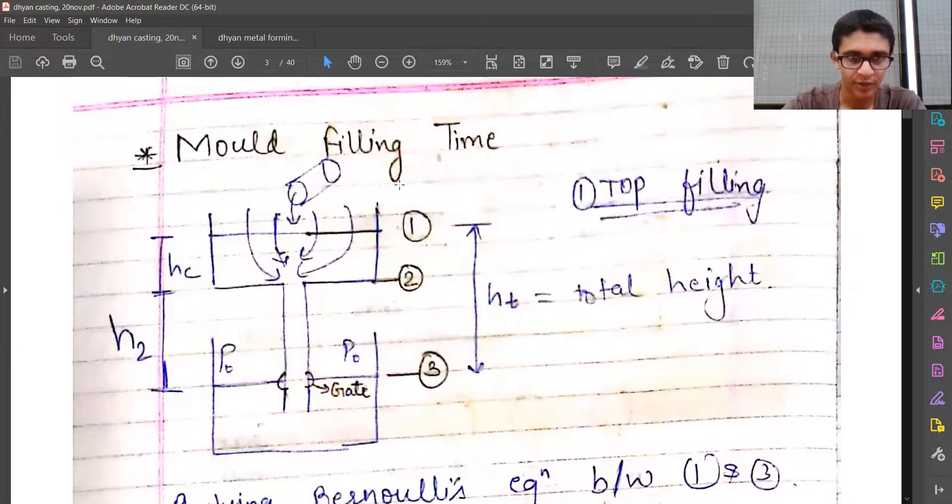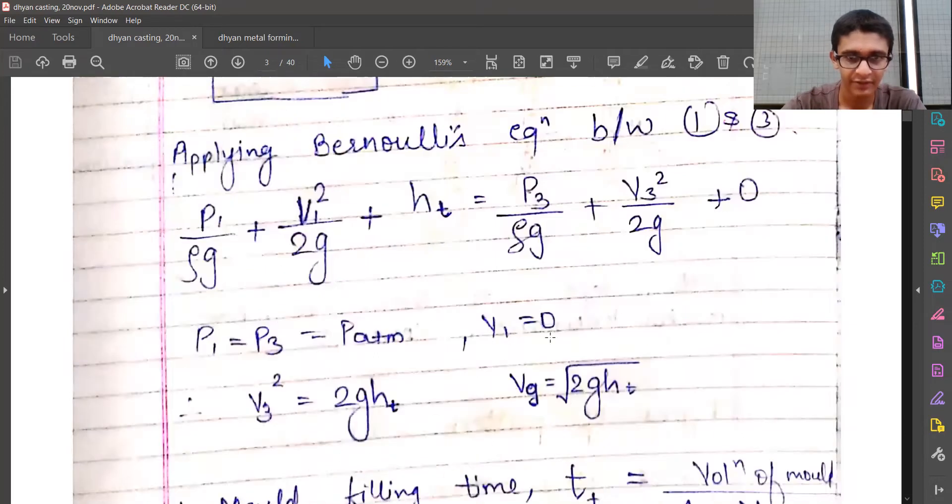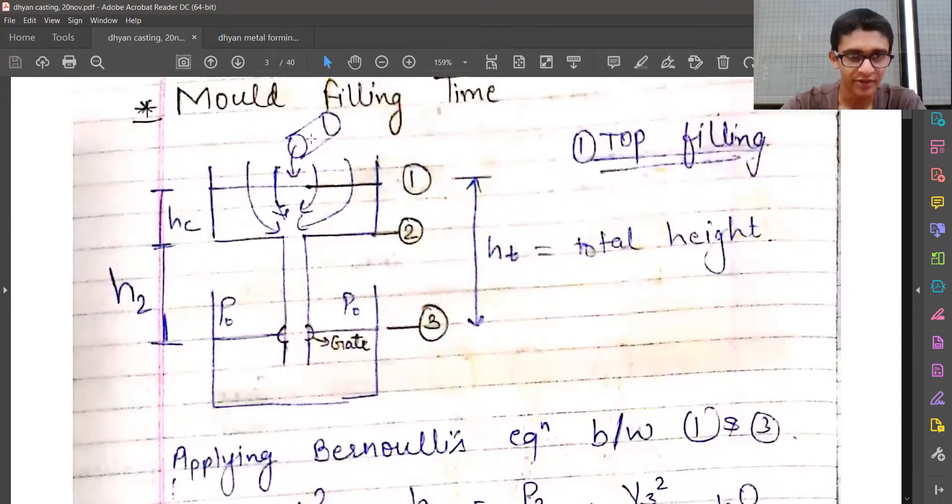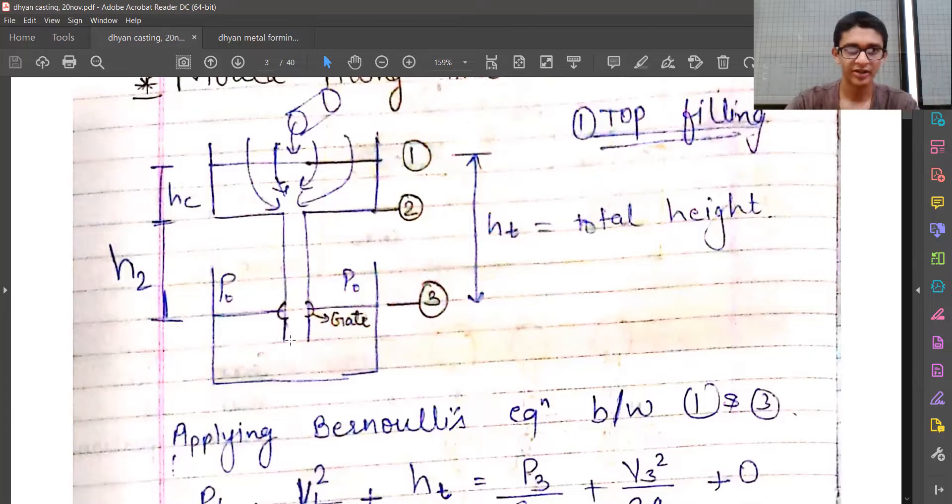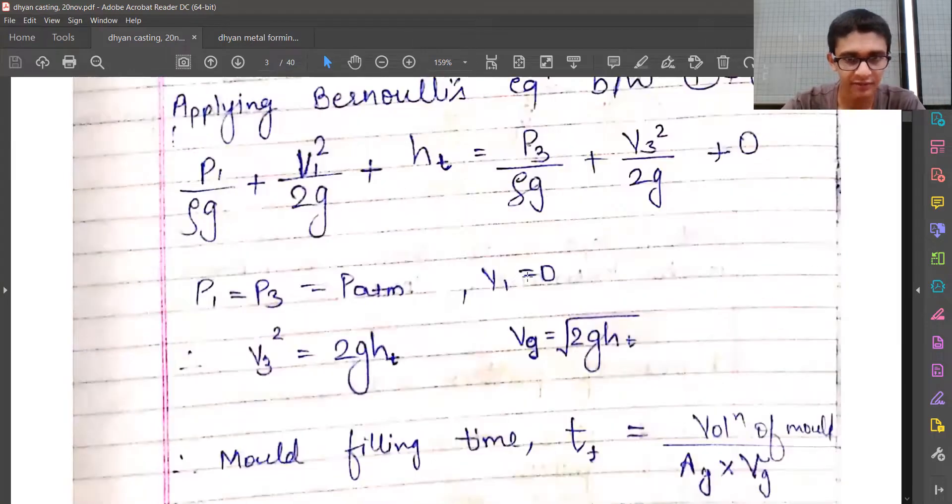v1 will be approximately zero. When we pour the material and it gets inside the cast, this level is not going to change very much. We will keep pouring until all the corners are filled up. In that case, the velocity at position 1 is going to be almost equal to zero.